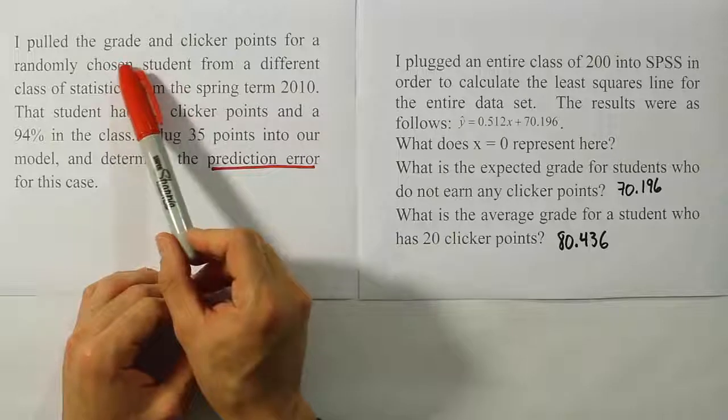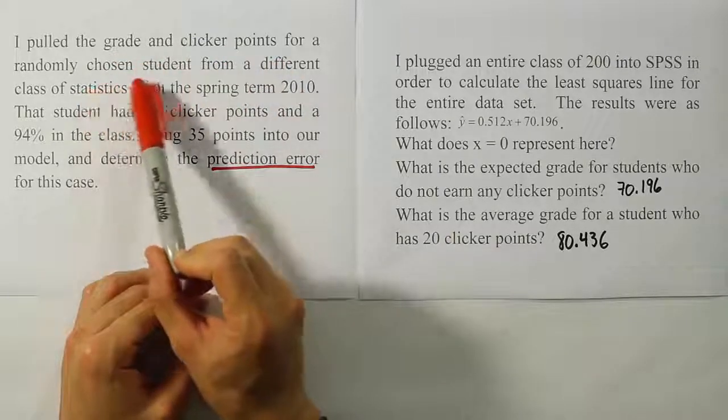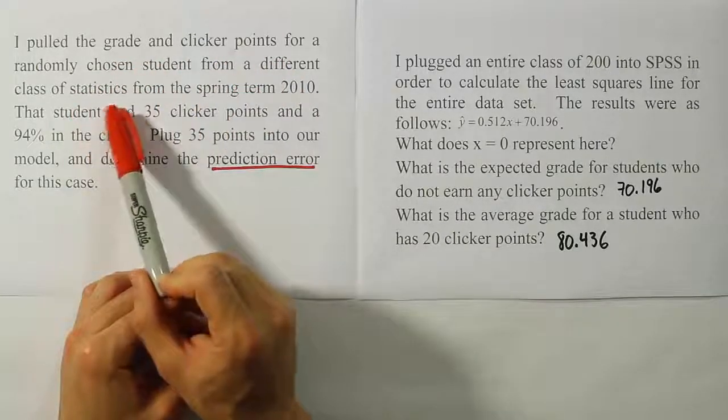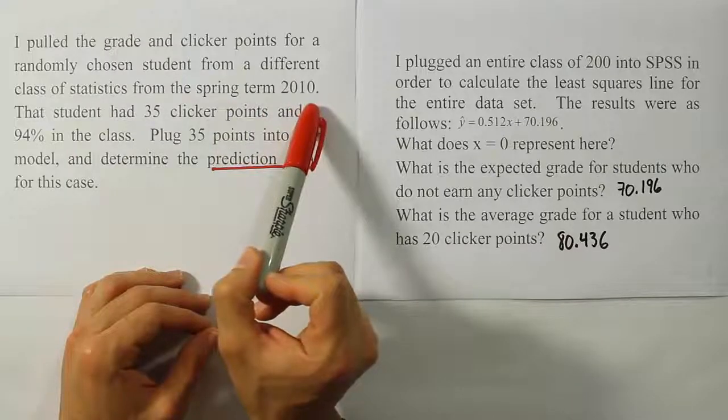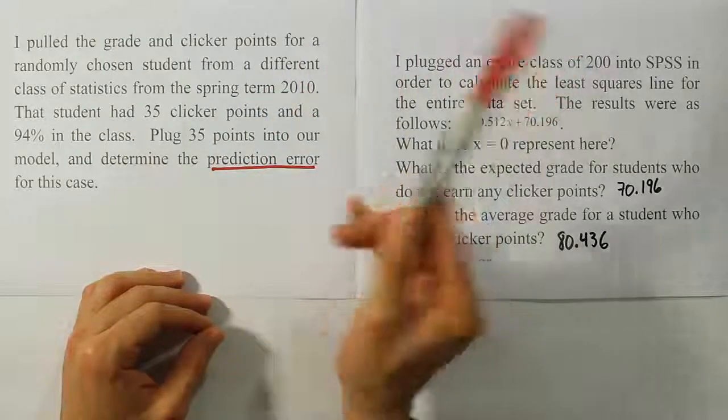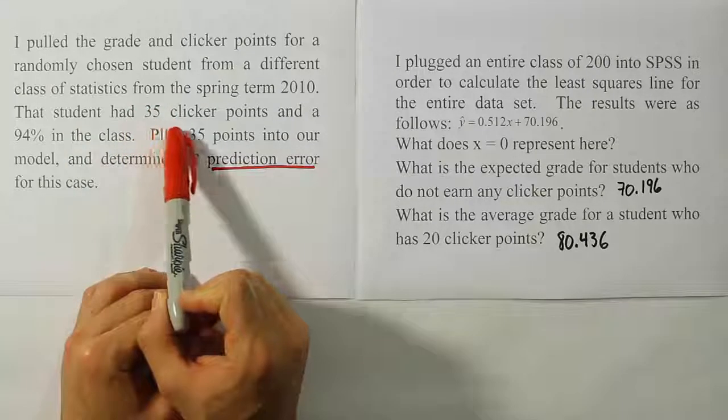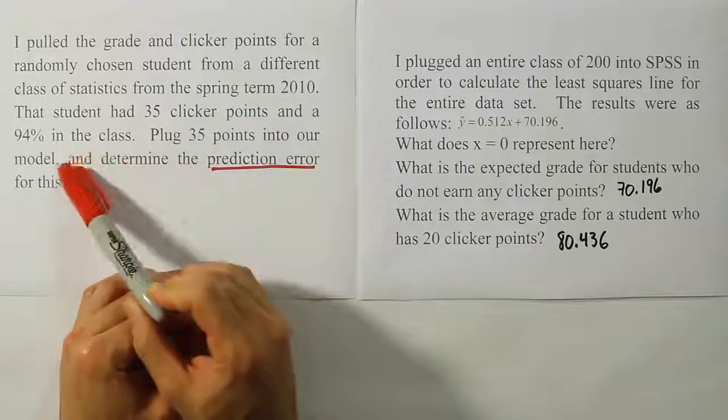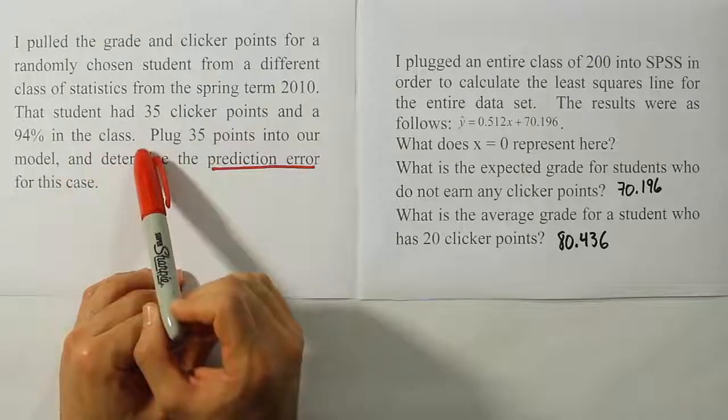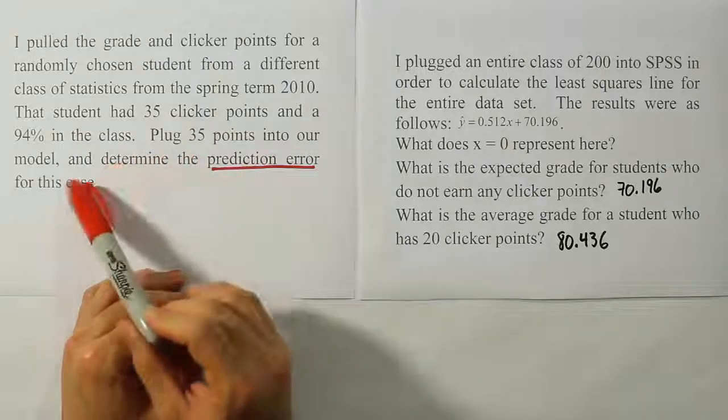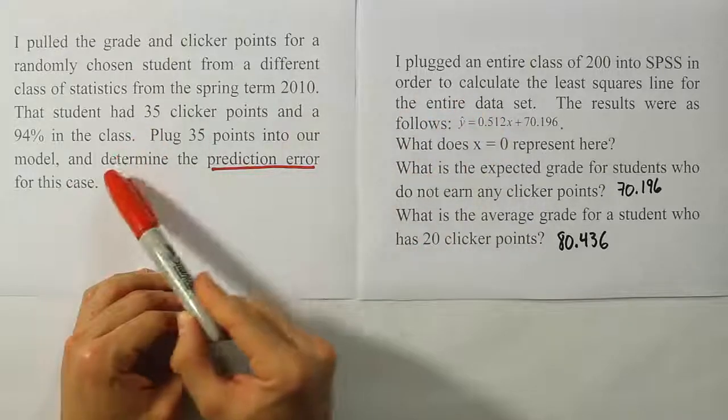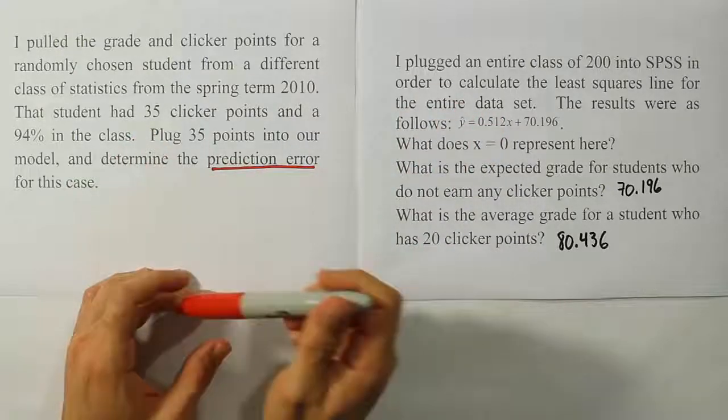So it says, I pulled the grade and clicker points for a randomly chosen student from a different class of statistics from the spring term of 2010. That's the same term that I collected this data for, right? And it says that that student had 35 clicker points and a 94% in the course. Plug 35 points into our model, so plug the 35 into this equation, and determine the prediction error for this case.